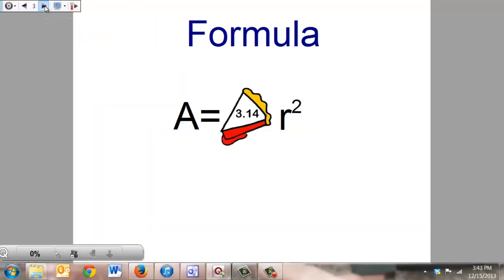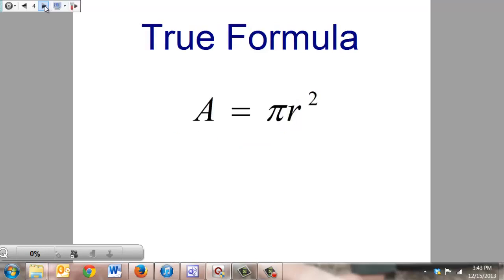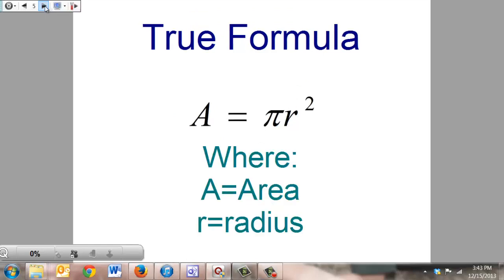The formula for area of a circle is area equals pi times radius squared, otherwise known as πr², where pi is 3.14, and R is the radius.